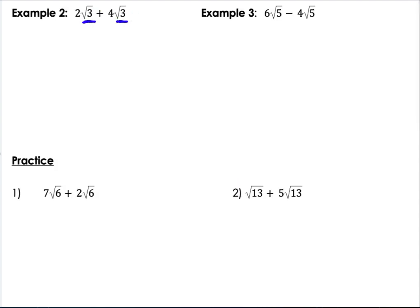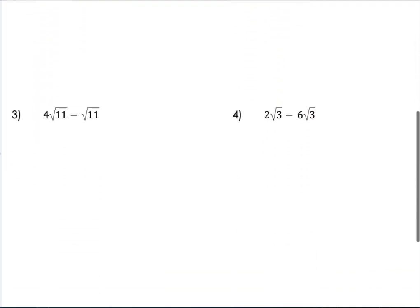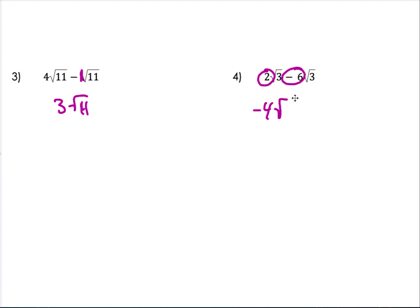Let's see a couple of examples. Here, same radicand, square root of 3: I just add 2 plus 4 is 6. Here, same thing under the square root, square root of 5, so 6 minus 4 is 2. Here I've got 7 plus 2 is 9 square roots of 6. Here I've got 1 square root of 13 plus 5 square roots of 13 is 6 square roots of 13.